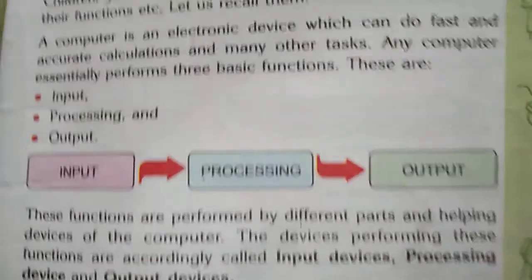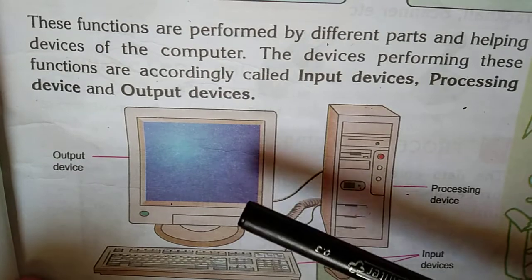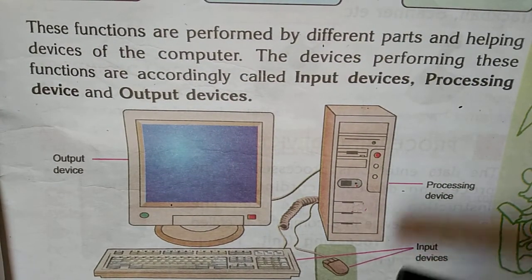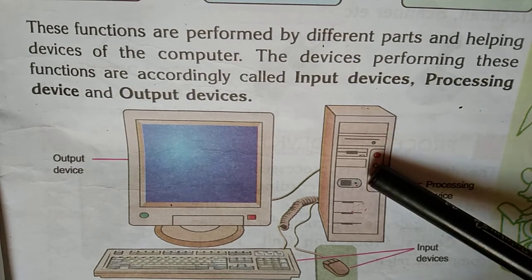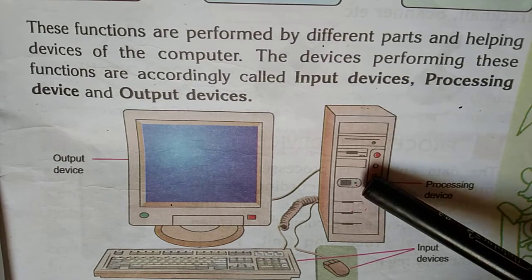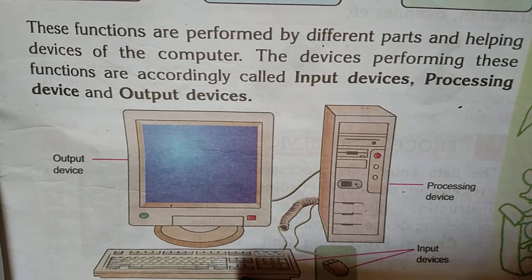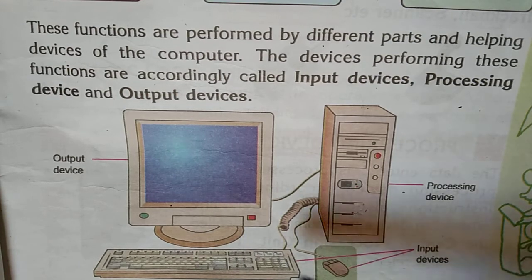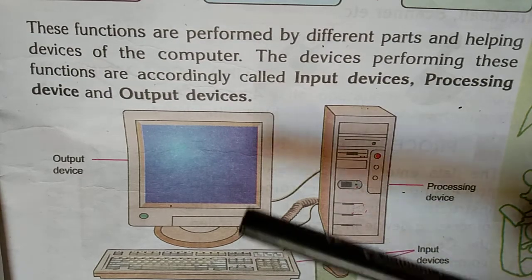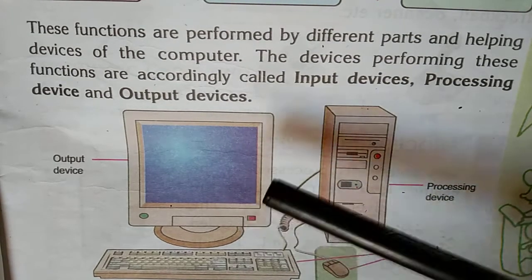This is a picture of a computer — see that. Monitor, keyboard, mouse, CPU. CPU is the processing device of the computer, the brain of the computer, which performs all the calculations. Mouse and keyboard are the input devices — with their help we give input to the computer. This is the monitor; it displays the output of the result, so it is the output device.